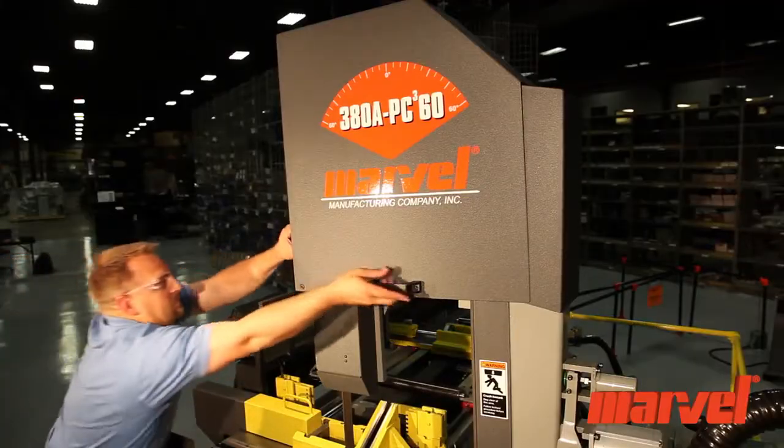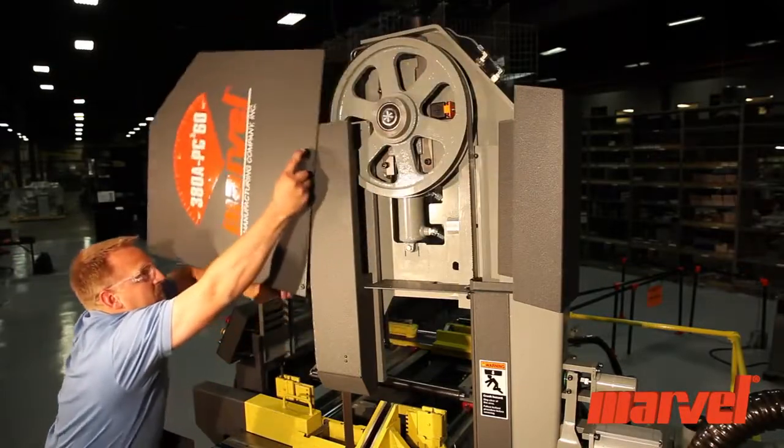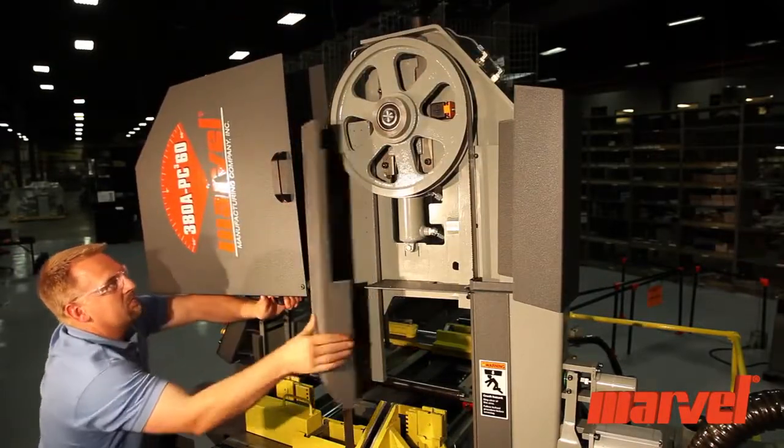Now open the upper band wheel cover and guide arm cover to expose the remaining parts of the blade.